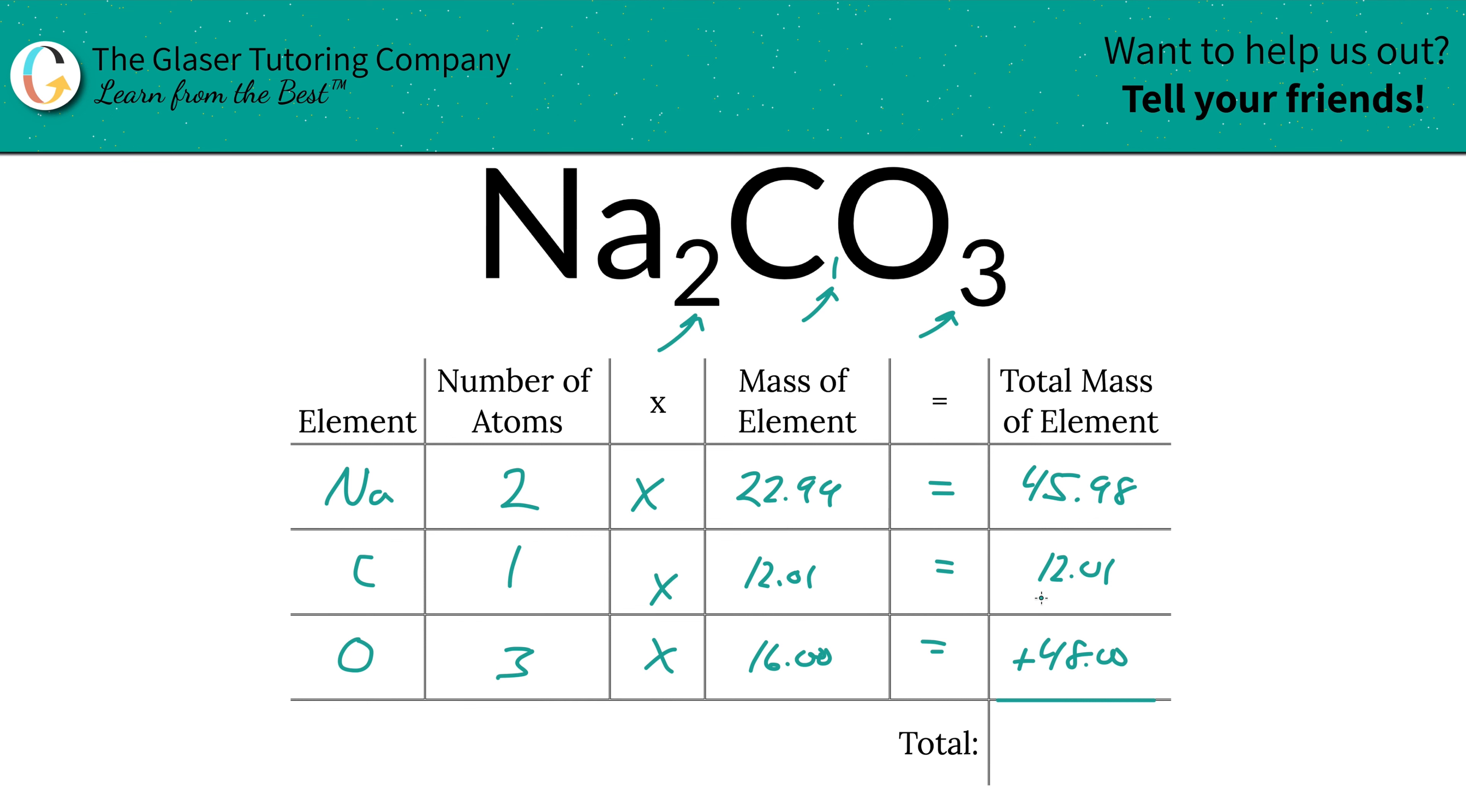And then to find the total mass of the entire compound, just simply add up all of these total masses of each element. So it's going to be 105.99. And there you have it, that's the total mass of the compound. That was the first step. Now with this in hand, I'm going to add a column to the table to calculate those percentages.